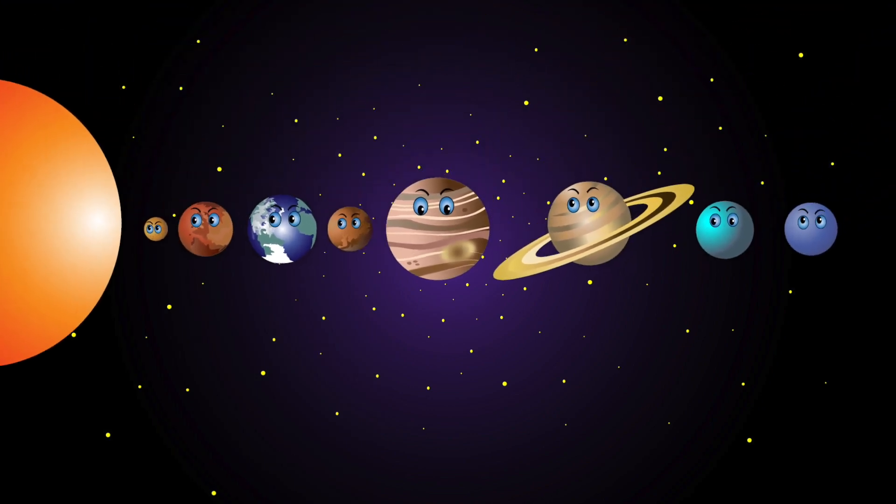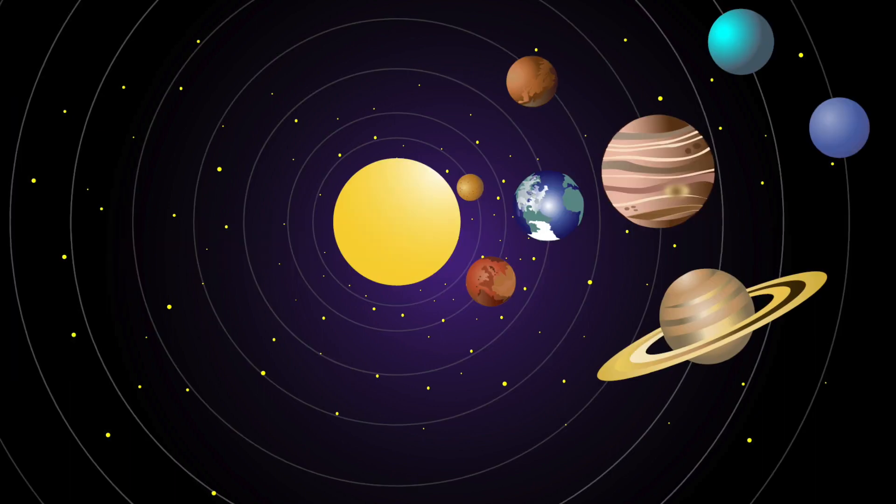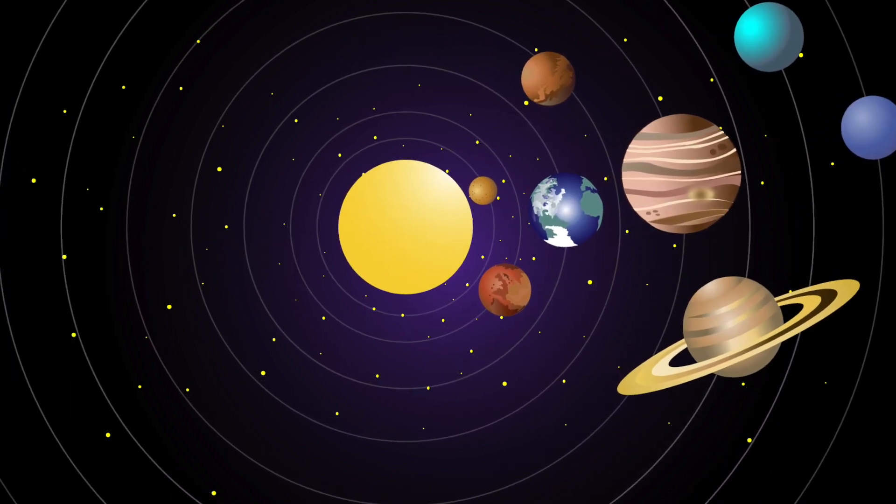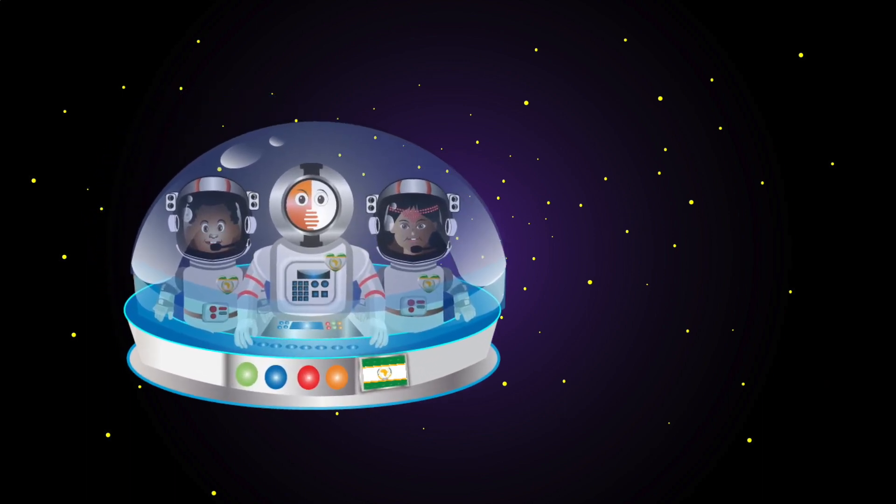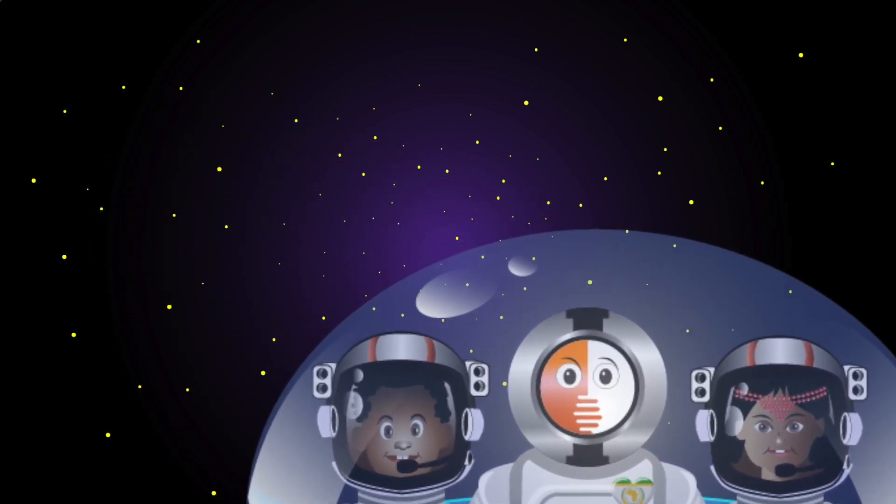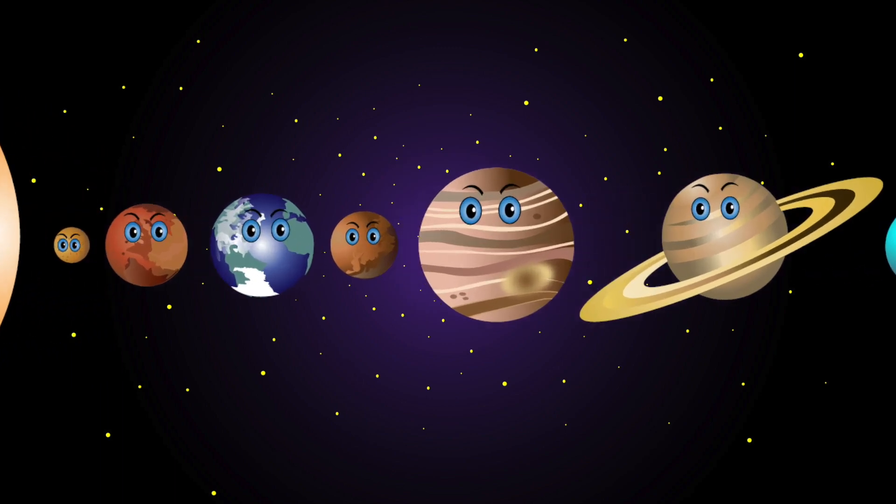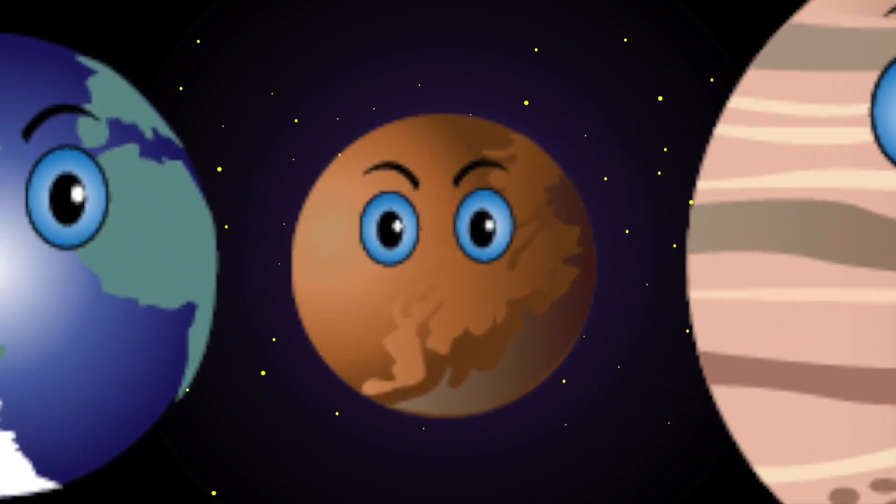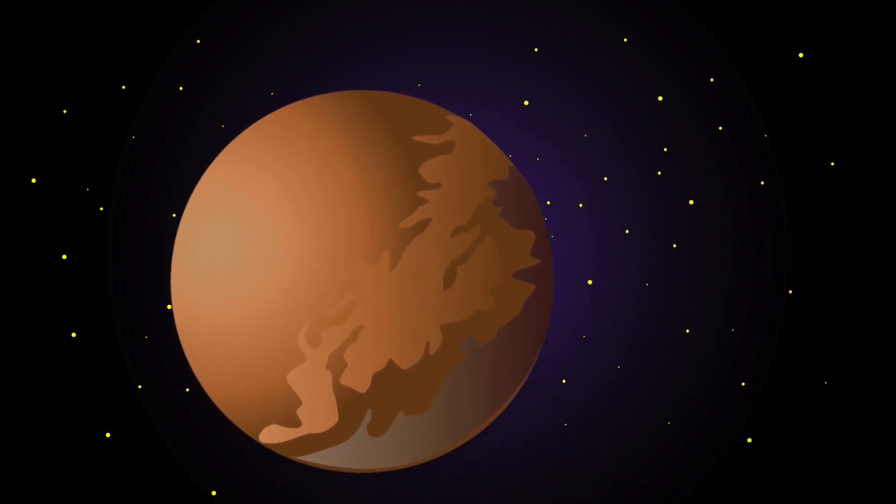There are eight planets in our solar system. We revolve around the sun. Join us to learn about the different planets. Now sing along and have some fun. My name is Mars. I am red in color. I'm the fourth planet from the sun. I have the highest mountain in our solar system, a volcano named Olympus Mons.